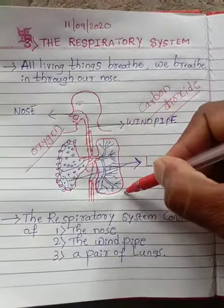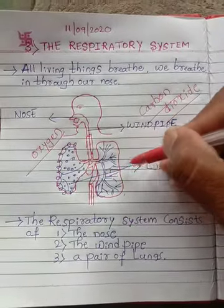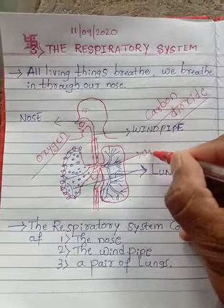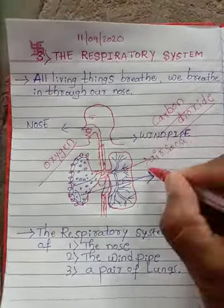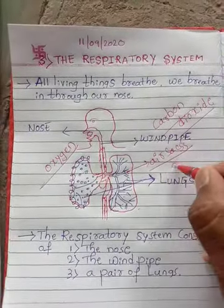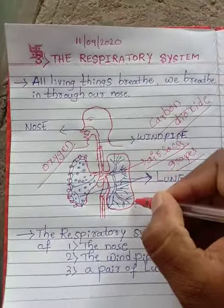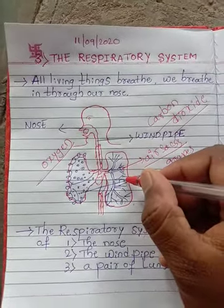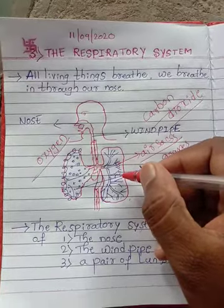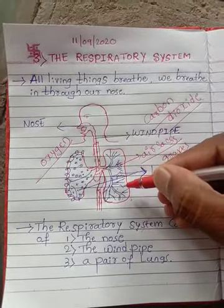These lungs are made up of thousands of air sacs. These air sacs look like bunches of grapes. Each air sac is surrounded by blood vessels called capillaries. So each air sac is surrounded by capillary blood vessels.